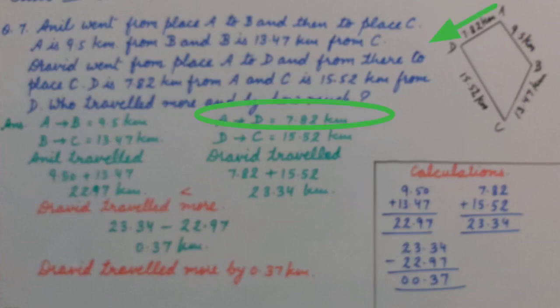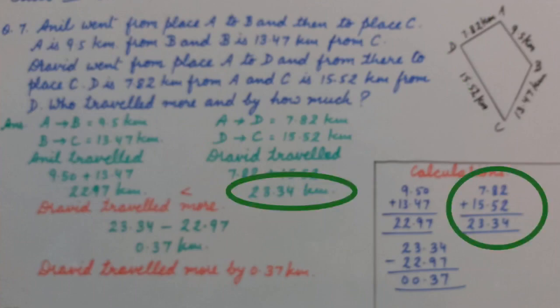Distance from A to D is 7.82 km and D to C is 15.52 km. It means Drawer travelled 7.82 plus 15.52 km, that is 23.34 km.